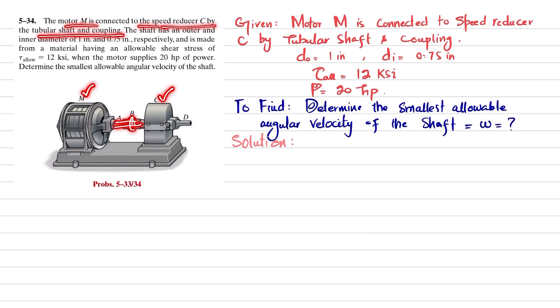This shaft is a tubular shaft. The shaft has an outer and inner diameter of one inch and 0.57 inch respectively. These are the diameters, inner and outer, and is made of material having allowable shearing stress of 12 ksi. So allowable shearing stress of this shaft is 12 ksi when motor supply is 20 horsepower.